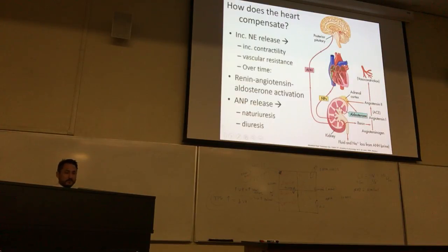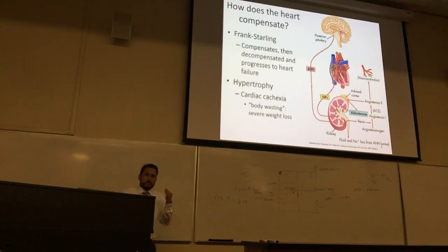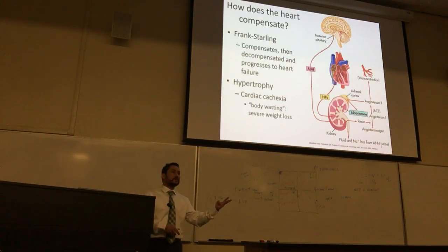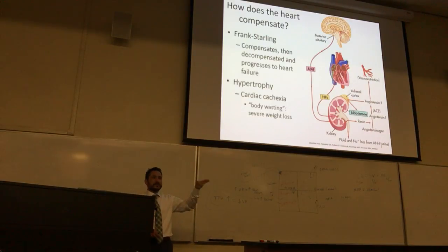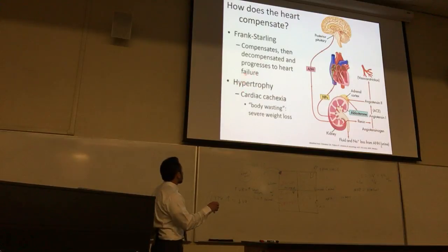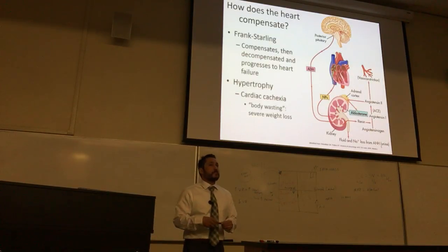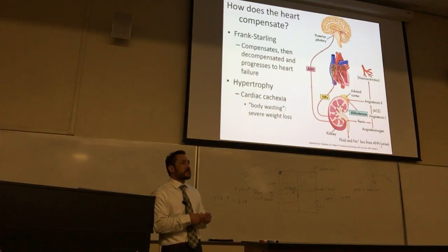Looking at different failure modes — left versus right side of heart failure. As the heart tries to compensate via Frank-Starling's Law, using norepinephrine, renin-angiotensin, or ANP, eventually the compensation leads to decompensation, making the problem worse. The patient progresses into higher levels of chronic heart failure. This whole time the heart is working harder, so you get hypertrophy — the heart itself will enlarge, it's like it's working out.